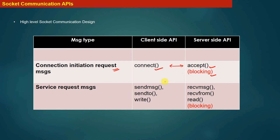Once the connection between the client and the server is fully established, the client sends service request messages — the actual data — to the server. In our example we used the write system call, but there are other equivalent system calls provided by Linux: sendmsg and sendto. These system calls are also used to send messages from client process to server process or vice versa.